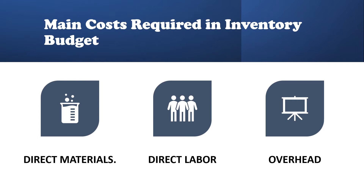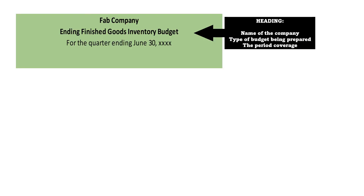The main costs required in the inventory budget are the direct materials, direct labor, and manufacturing overhead. In preparing an Ending Finished Goods Inventory Budget, it is like other budgets that we have already prepared. We have to write first the heading — the name of the company, type of budget being prepared, and the period coverage.